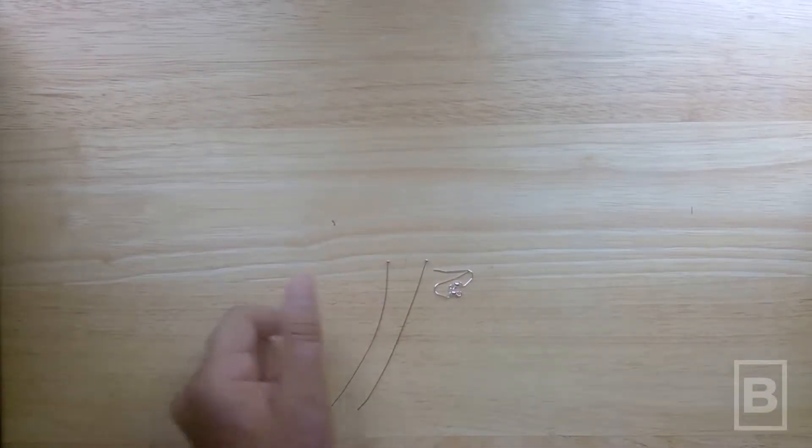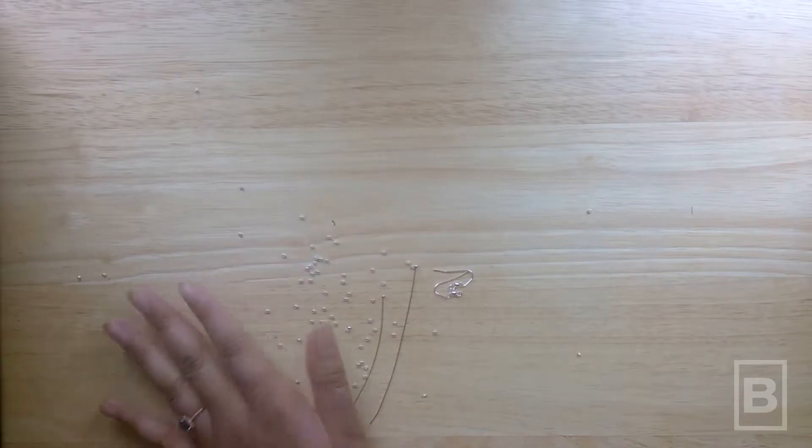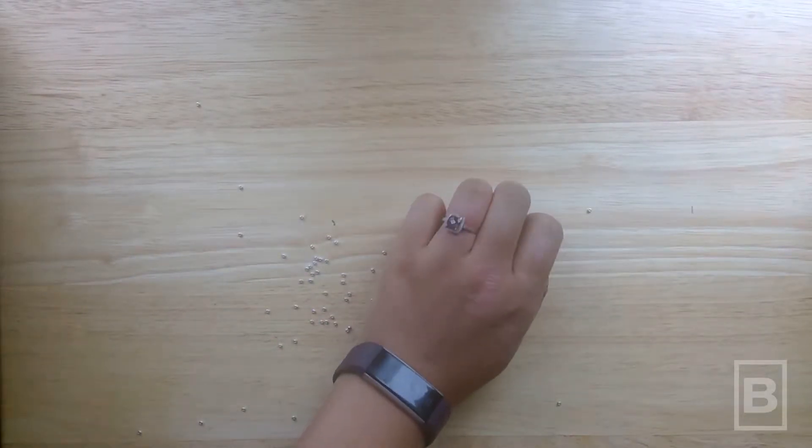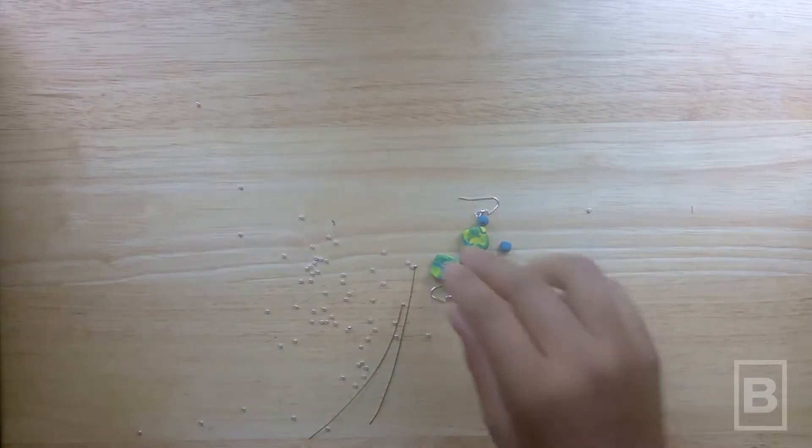To create the earrings, we are using fish hook earring hooks, two head pins, small silver beads, and handmade Sculpey beads. You will also need needle nose pliers to finish.